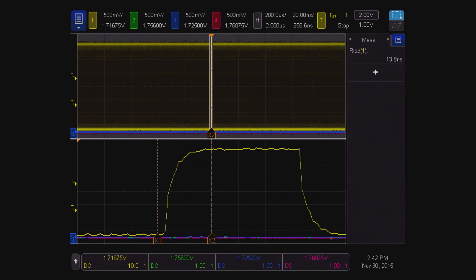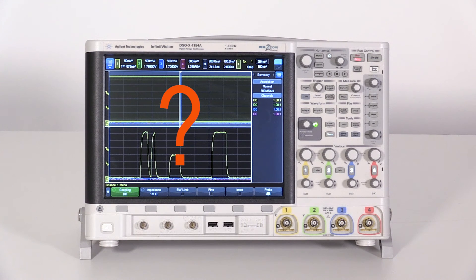Here the rise time measurement changes with different zoom settings because the display data is being used for the measurements. How do you know which rise time measurement to use when different zoom settings change the rise time measurement?